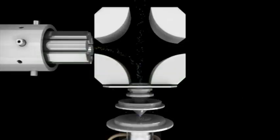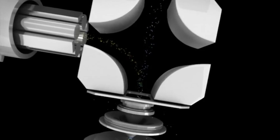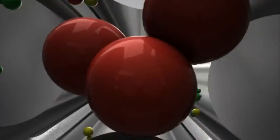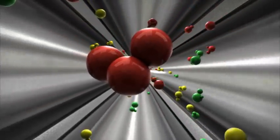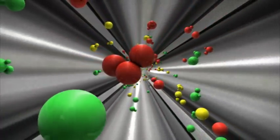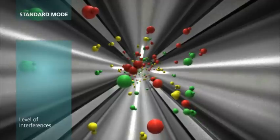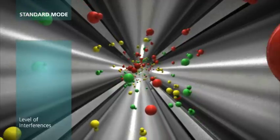The focused beam of ions passes from the quadrupole ion deflector into the universal cell. Depending upon your required level of interference removal and detection limits, the universal cell can be run in three different modes. For high-throughput routine applications, standard mode allows Nexion to operate like a non-cell instrument.